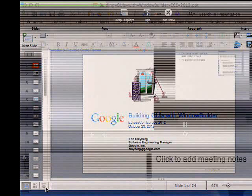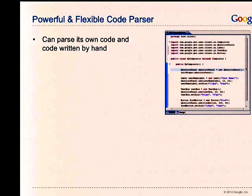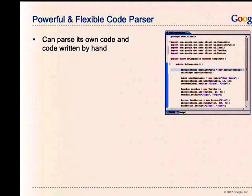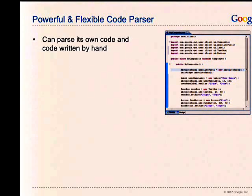Let's switch back to the slides. The next thing I'll talk about is the powerful and flexible code parser. The tool can not only edit its own code — code it generates — it can also pretty much edit any code you throw at it, whether it's generated by another GUI builder or code you've written by hand. You can actually point this at quite a bit of the code that's in Eclipse itself, or if you generate any of the standard RCP templates like the mail example, it'll happily edit any of those.